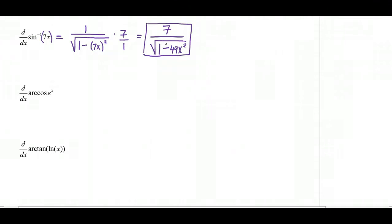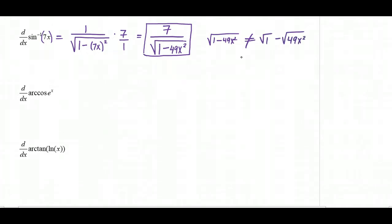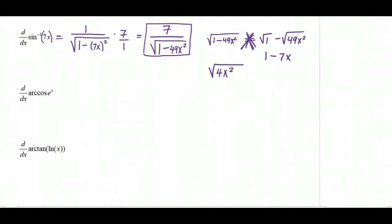A common mistake is thinking the square root can be distributed over each piece separately. The square root of one minus 49x squared is definitely not the square root of one minus the square root of 49x squared, which would incorrectly give one minus 7x. The square root only distributes over multiplication or division, not over addition or subtraction.